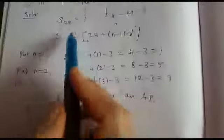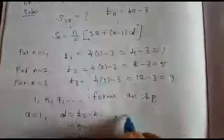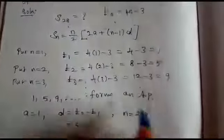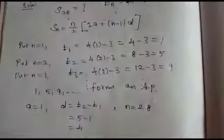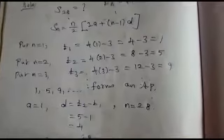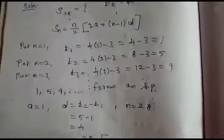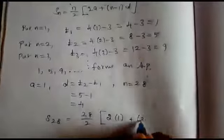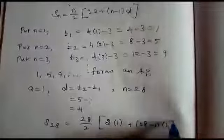Here, n is equal to how many terms? We want to find 28 terms. So n equals 28. Next, we put in this formula. So S28 equals 28 by 2, 2 into a, which is 1, plus n is 28 minus 1 into d is 4.